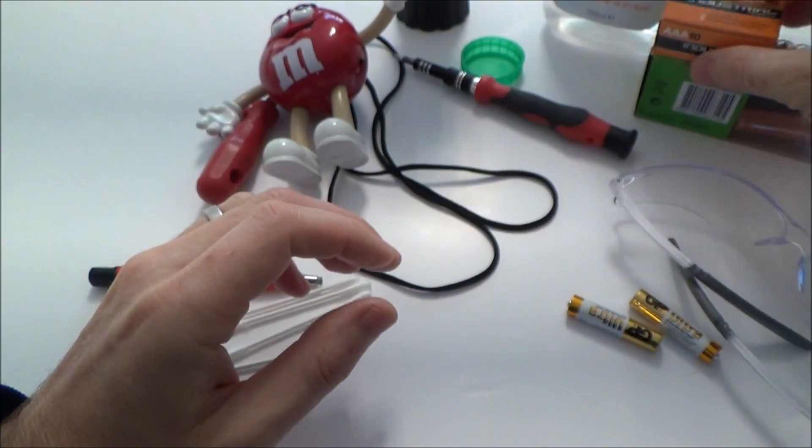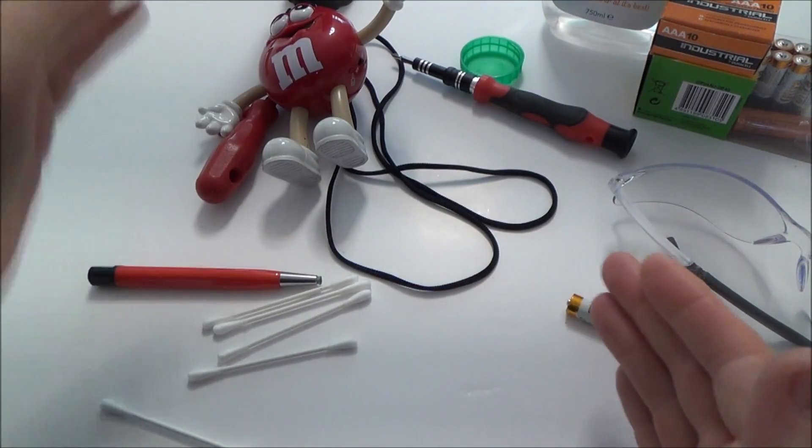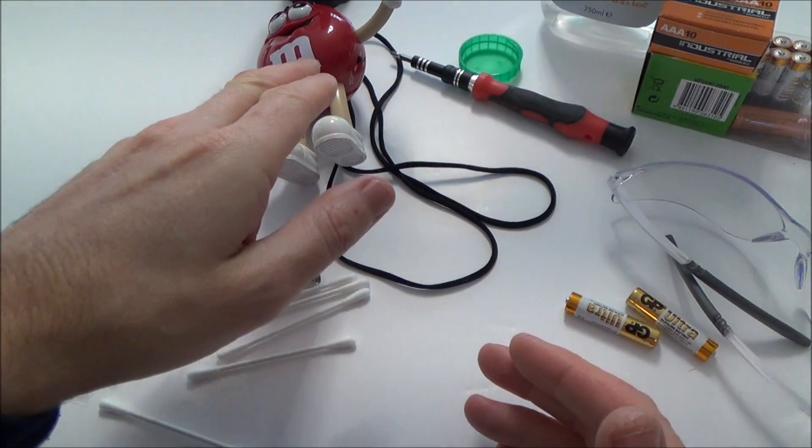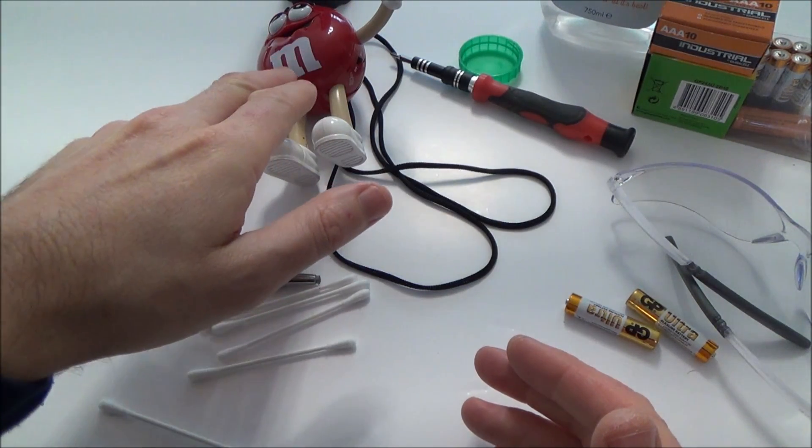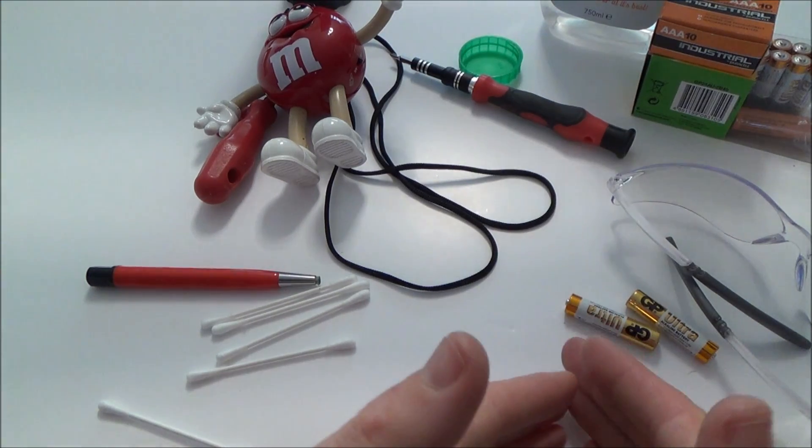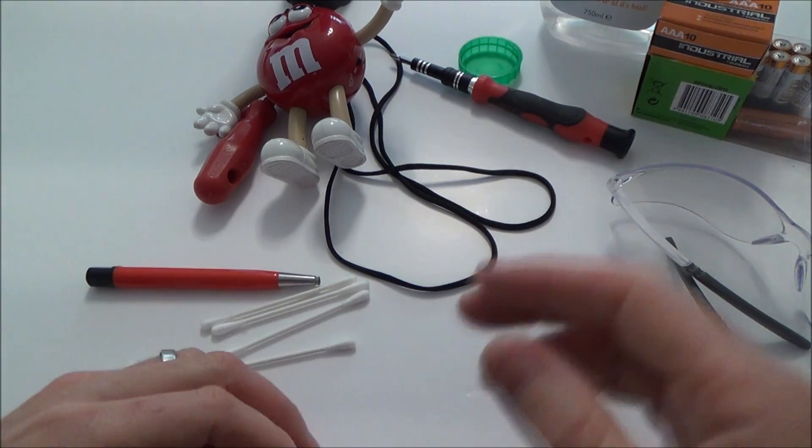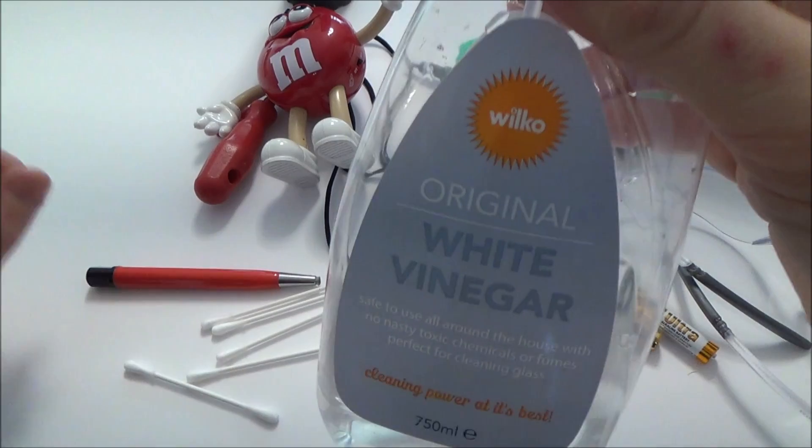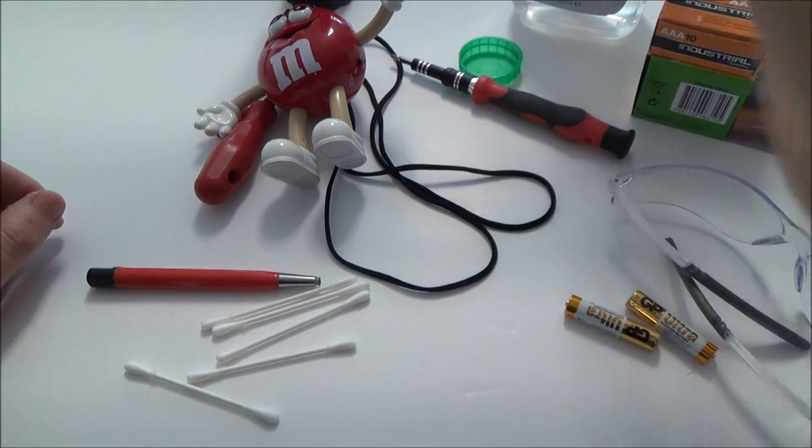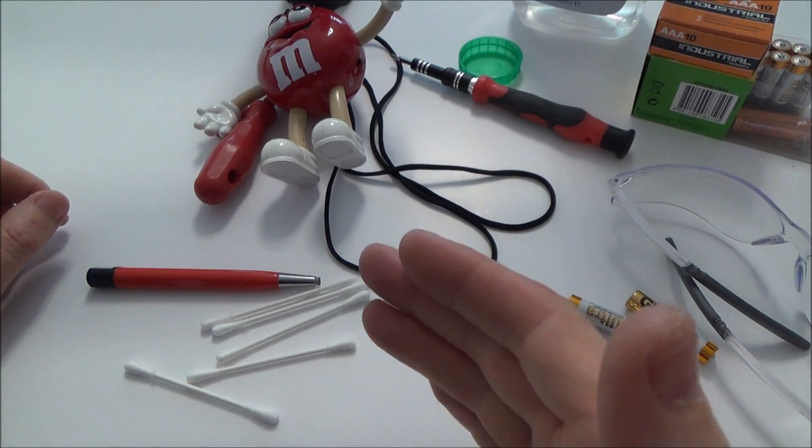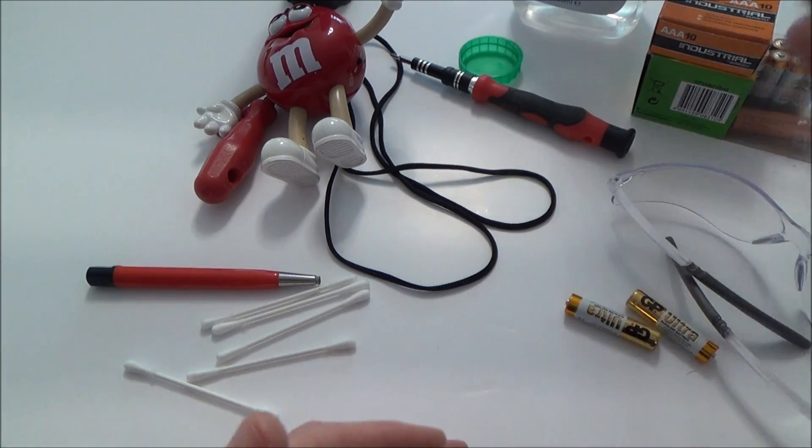With an alkaline battery that's got a high pH, so to neutralize it because otherwise the corrosion will continue to eat away at it, to neutralize a high pH we have to use a low pH. White vinegar is slightly acidic which is a low pH, so hopefully it will neutralize the high pH alkaline.